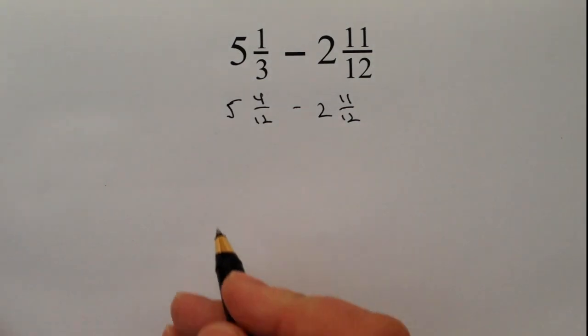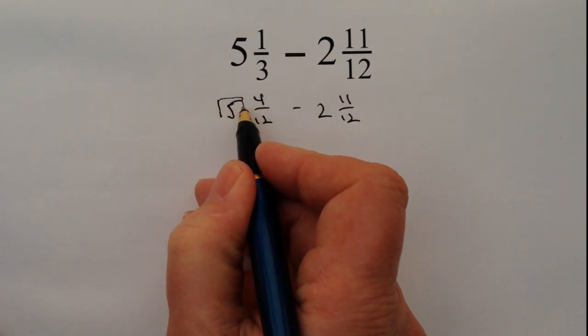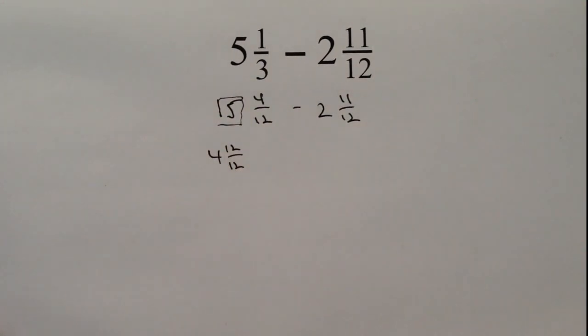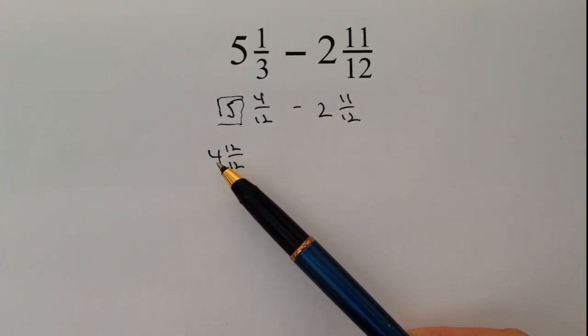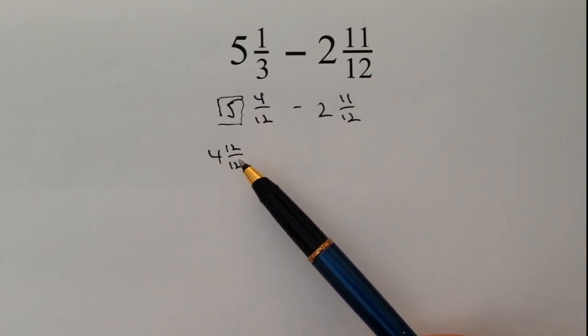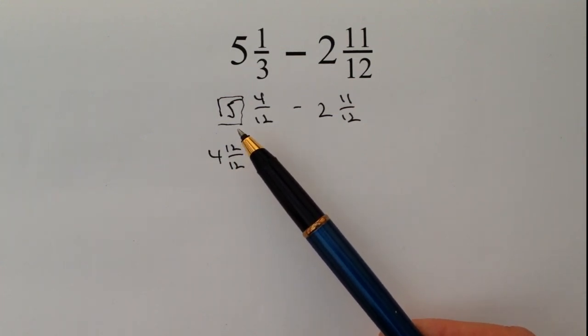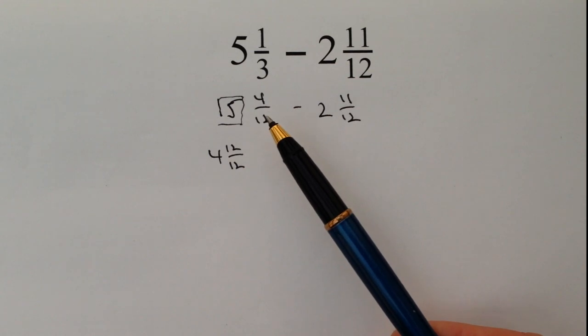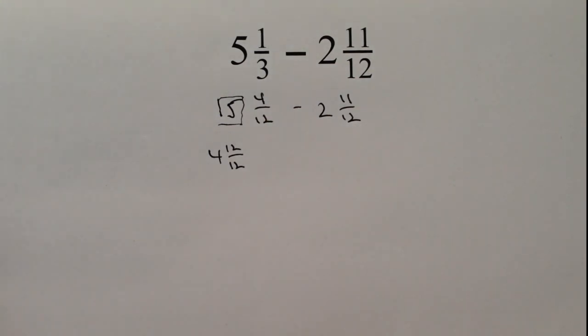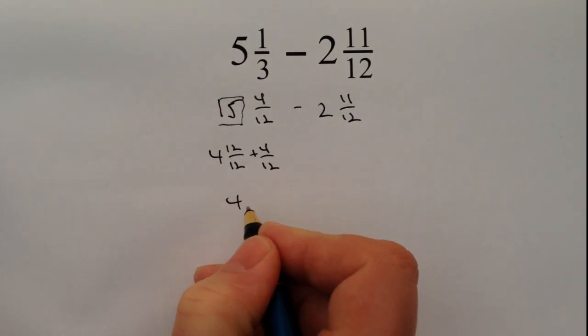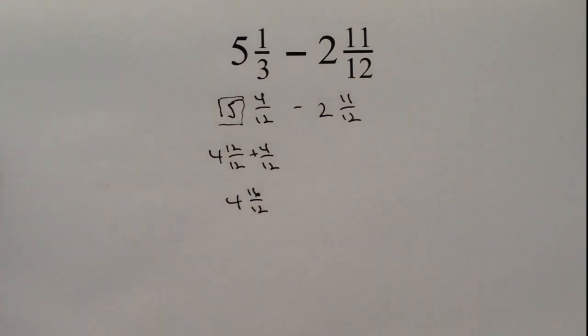So what I'm going to do is I'm going to pretend that rather than writing this 5, I'm going to write this 5 as 4 and 12 twelfths. I'm just going to convert it to 4 and 12 twelfths because you can imagine what I've done there is I've got 4 wholes and 12 twelfths is the same as saying 1. So 4 plus 1 is 5, which means then that I can just add that 4 twelfths to this and I end up with a mixed number that looks like 4 and 16 twelfths. Now that's exactly the same as saying 5 and 4 twelfths.